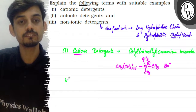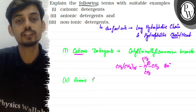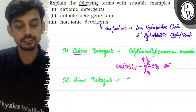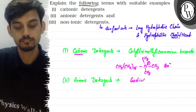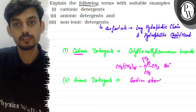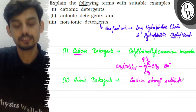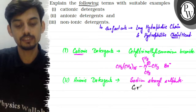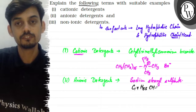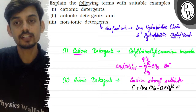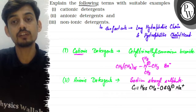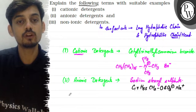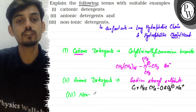Similarly, in an anionic detergent, the hydrophobic chain has a negative charge on the head, giving it an anionic nature. A common example of an anionic detergent is sodium steryl sulphate, and that is why such detergents are called anionic detergents.